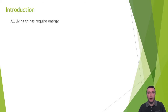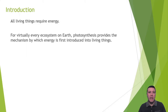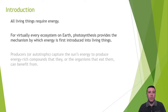All living things require energy. That energy is necessary not only for sustaining life, but propagating it via reproduction as well. For practically every living thing on Earth, photosynthesis is the process by which energy is first made available to living things in an ecosystem. It begins with producers, also known as autotrophs, capturing the sun's energy and producing energy-rich compounds from which the plant can benefit.